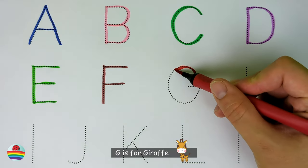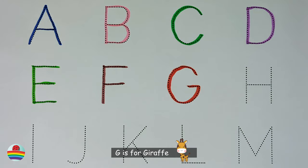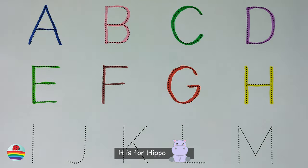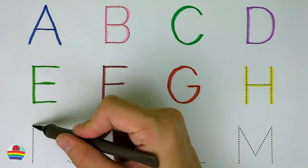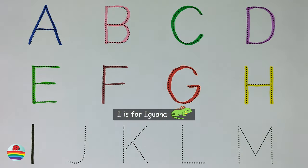G. G is for giraffe. G. H. H is for hippo. H. I. I is for iguana. I.